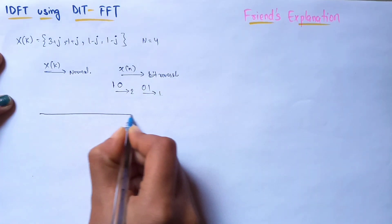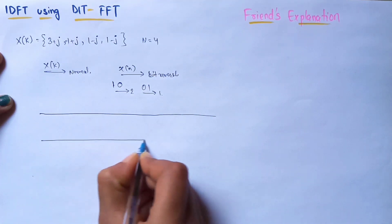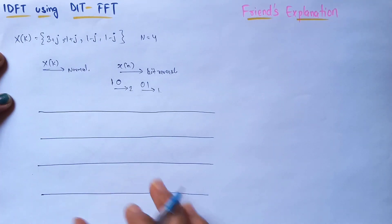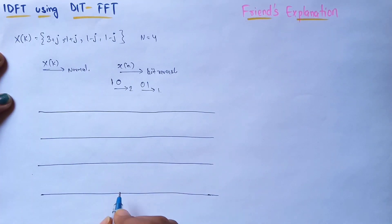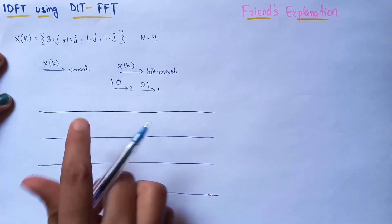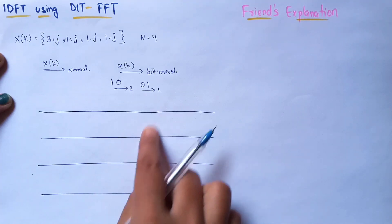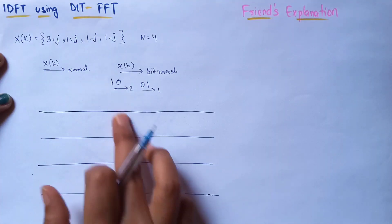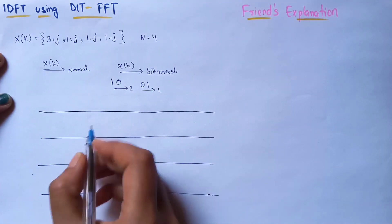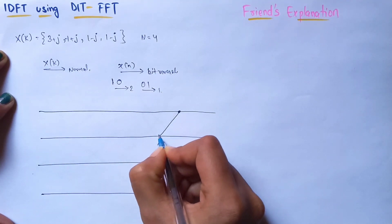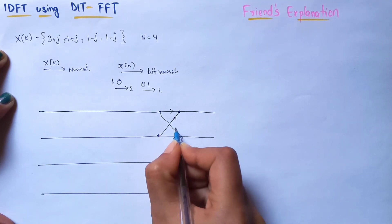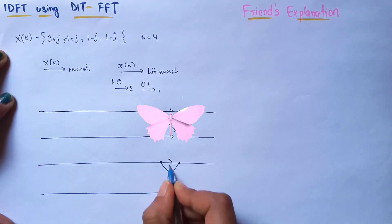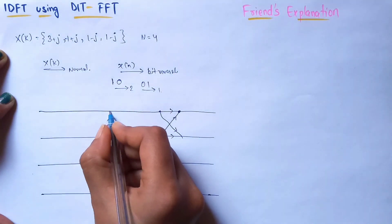Now I am going to draw the butterfly diagram to perform the Inverse Discrete Fourier Transform. As it is inverse, compared to the previous video where I took one butterfly on the left and two butterflies on the right, here we will take two butterflies on the left and single butterflies on the right. So we will draw the single butterflies first.